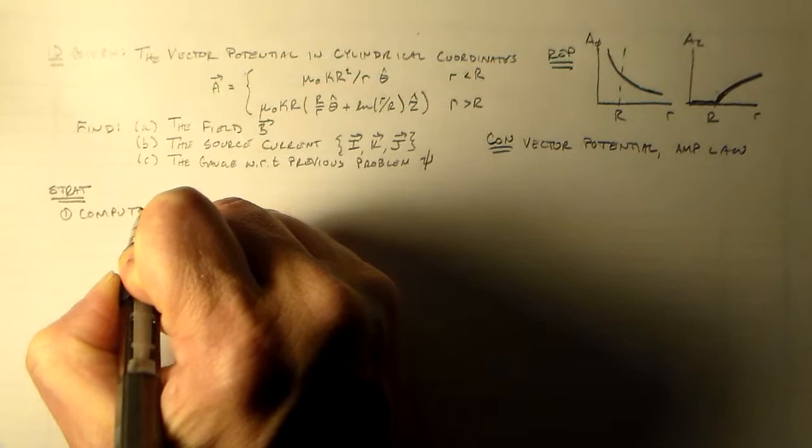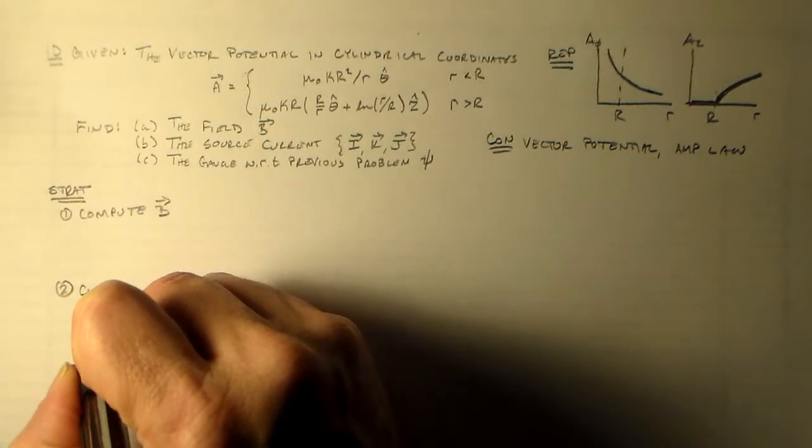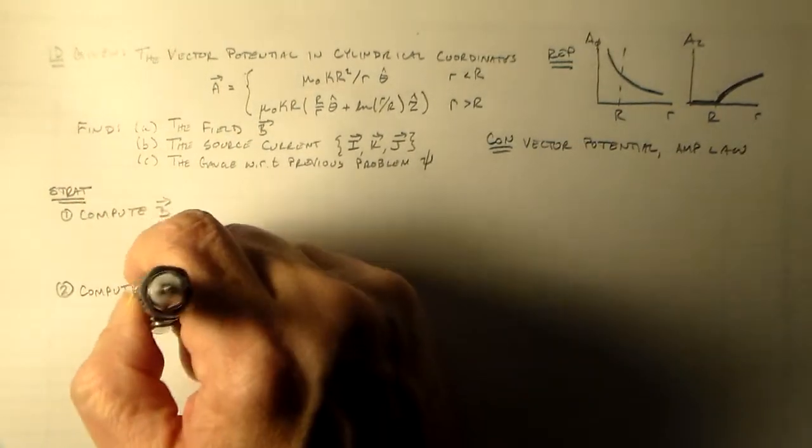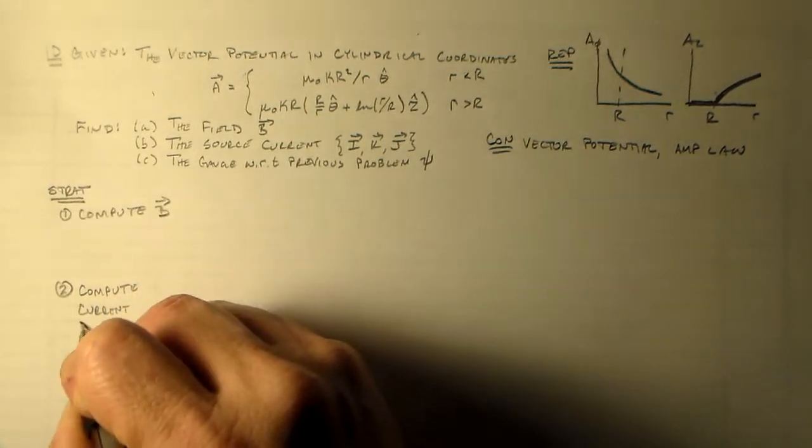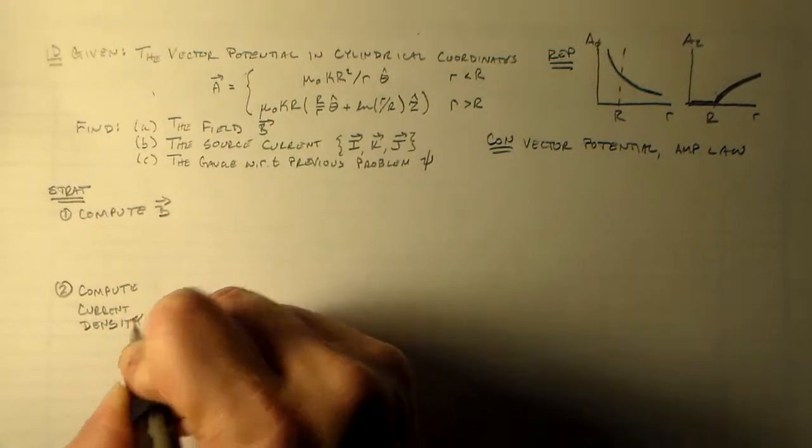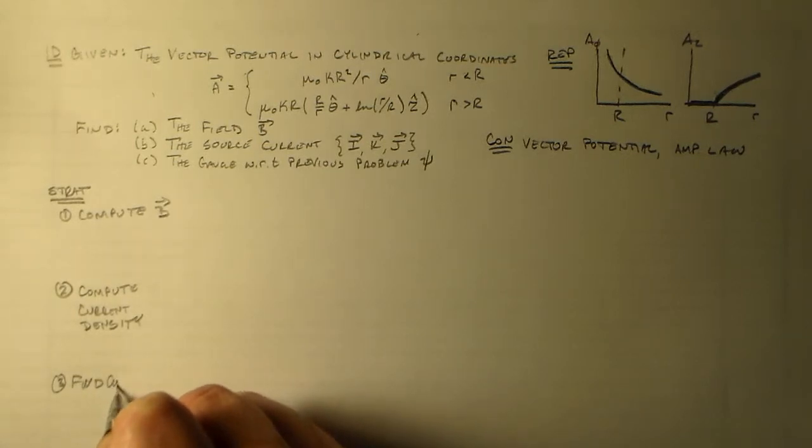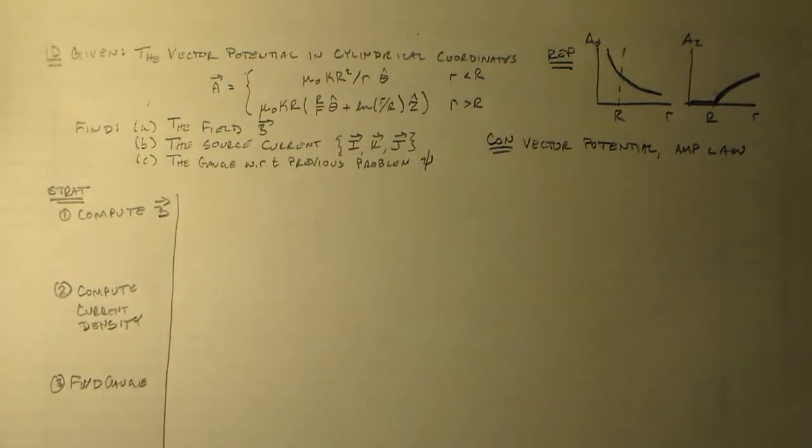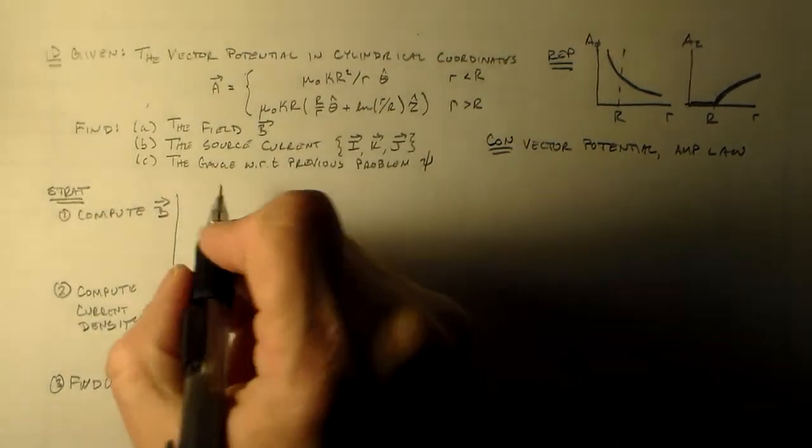After we have B, we'll compute the current density. And after that we'll find the gauge. So everything's really straightforward. We'll just use some simple rules.